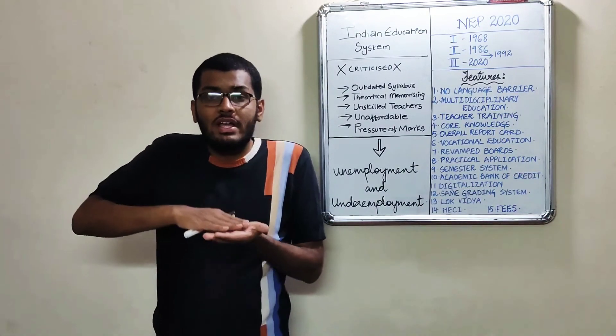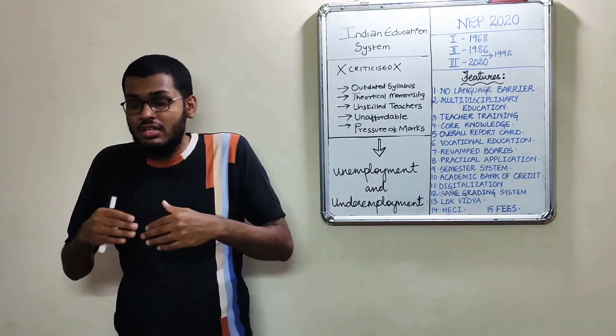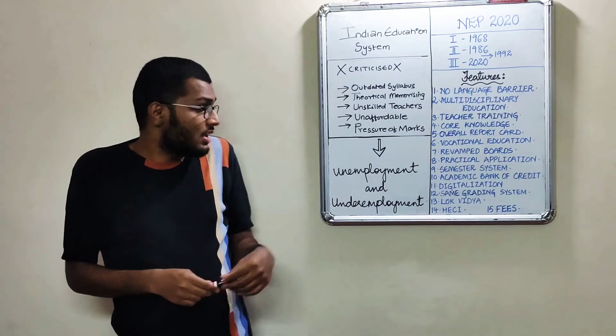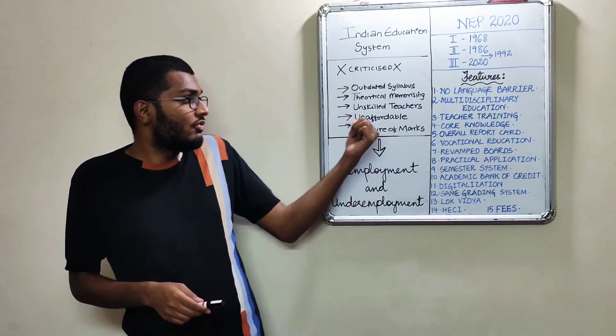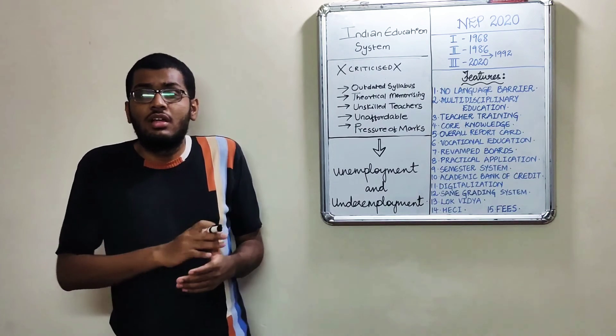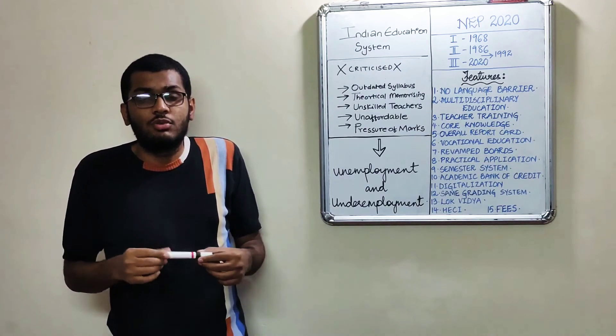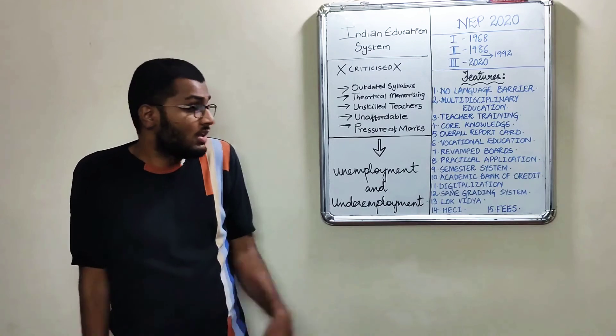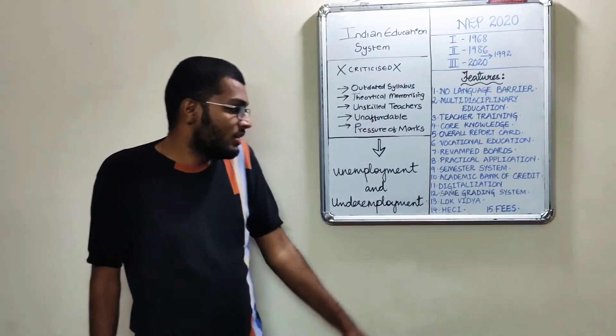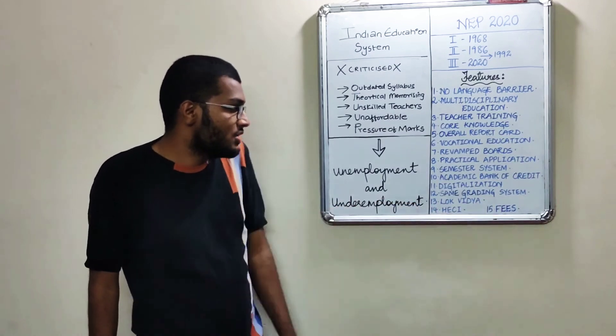And number fifteen is fees regulation. Fees will also have a regulation that you cannot increase the fees beyond a stipulated regulation. For example, in today's time we talked about unaffordable education. Every education institution is increasing their cost of education, providing education at a very enormous level. To control and regulate this, the fifteenth point - fees regulation - will also be worked upon.